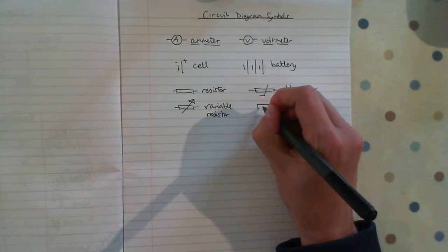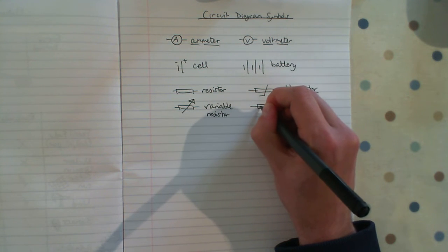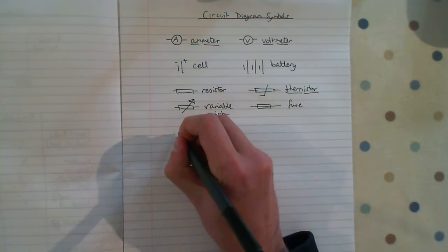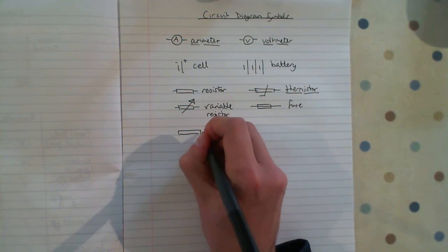There are two special types of resistor. One is a fuse, where the line goes all the way through it, and there's also something called an LDR.